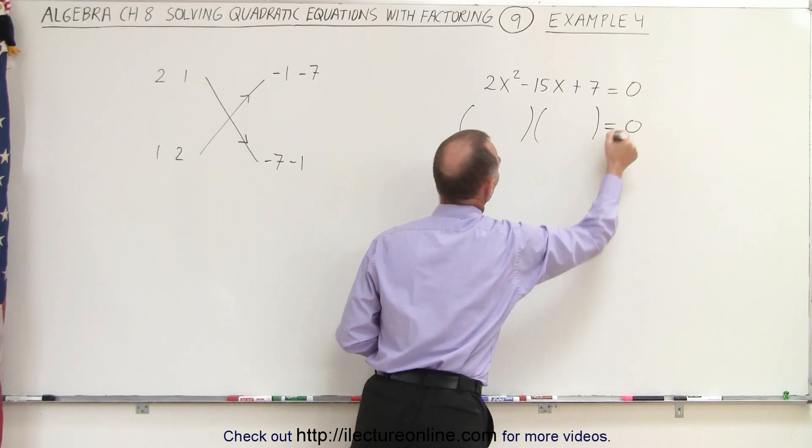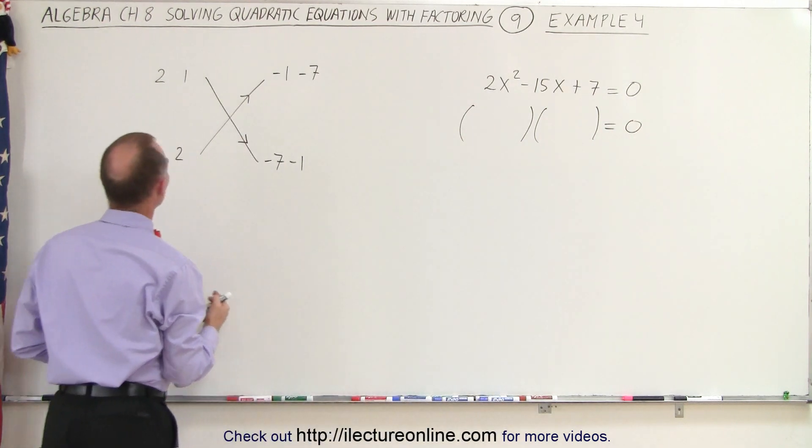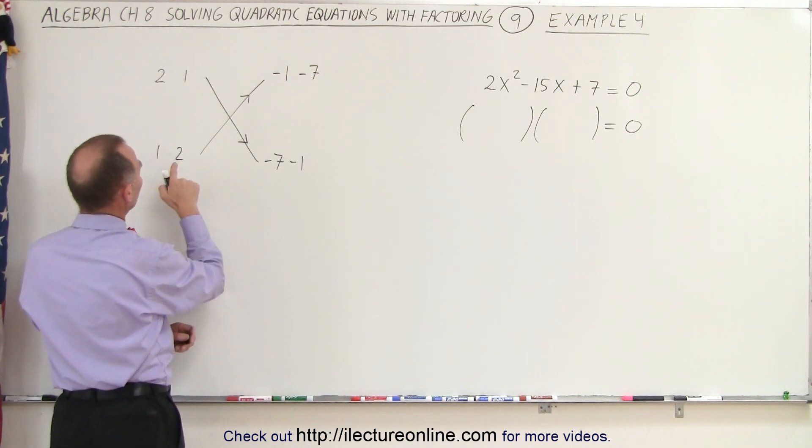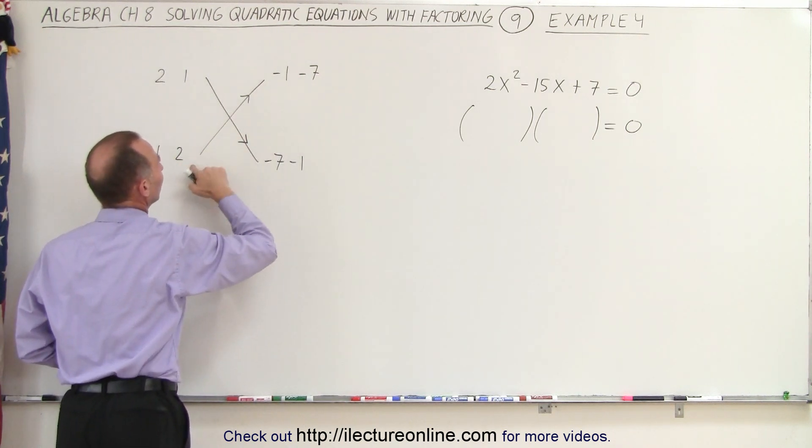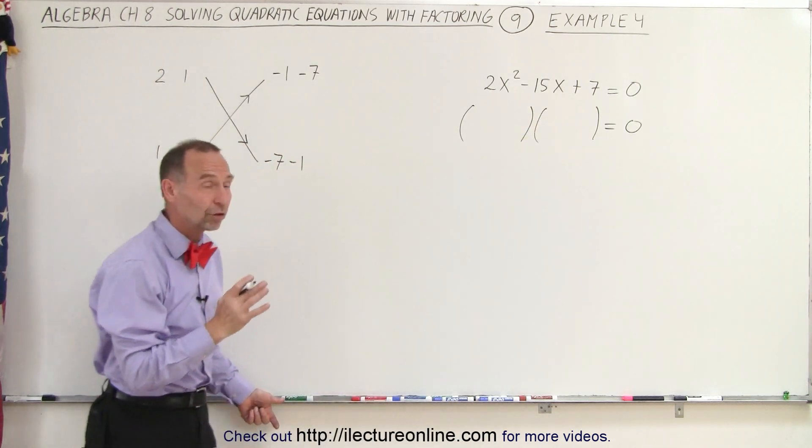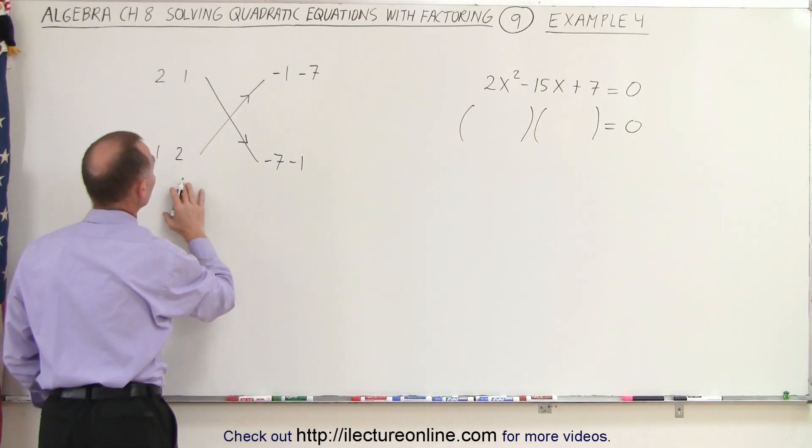So it looks something like this. And so, let's take a look. We want a big number. So I think the 2 times the negative 7 gives us negative 14, which is almost what we need for the middle term.